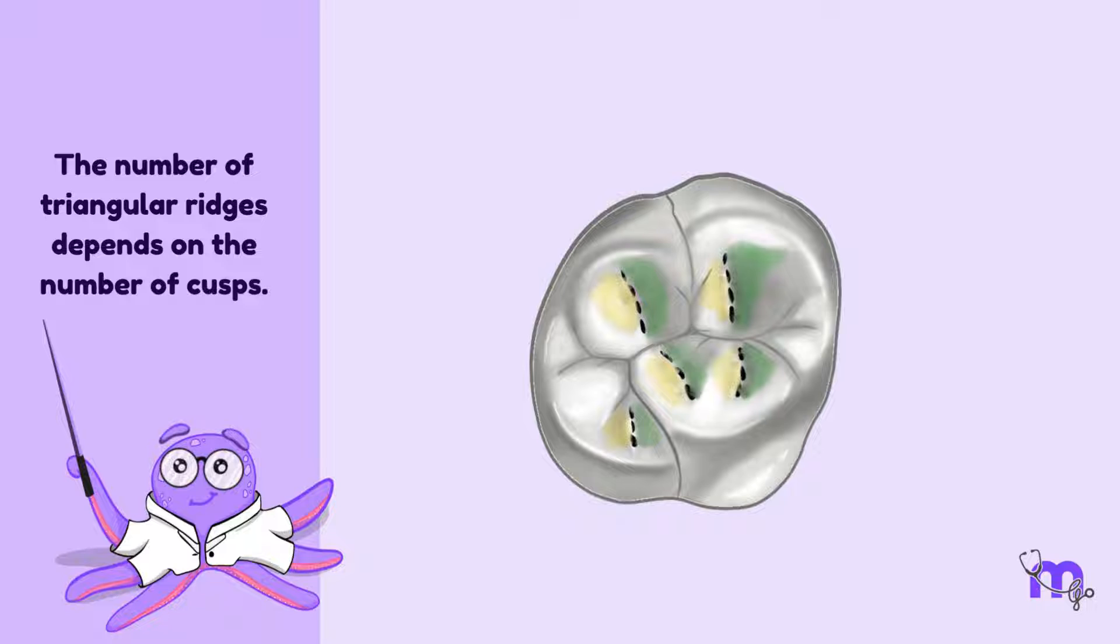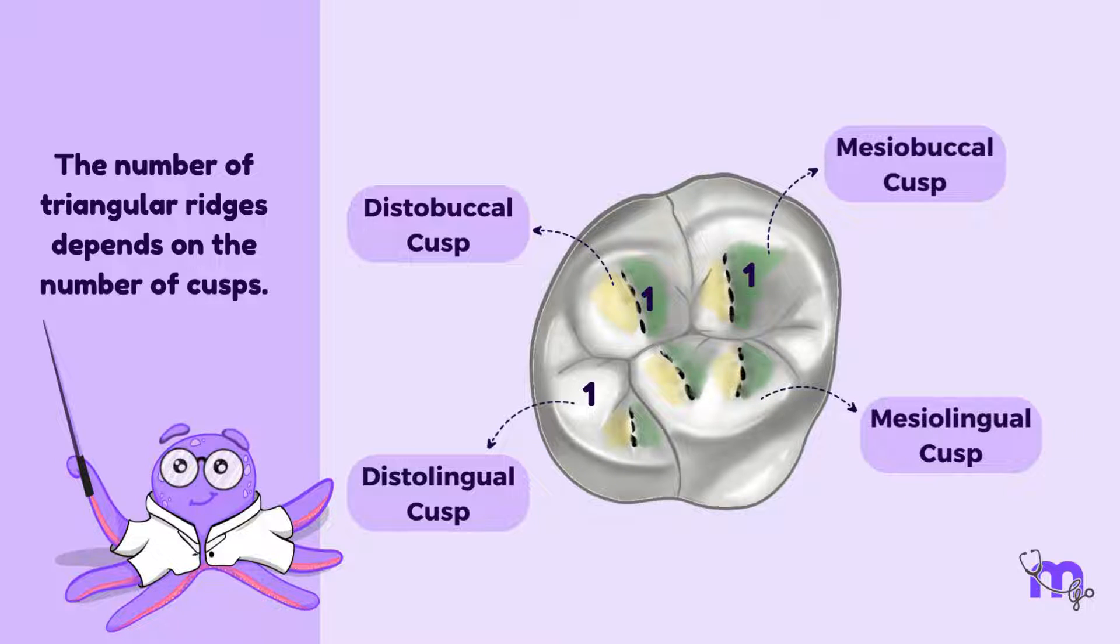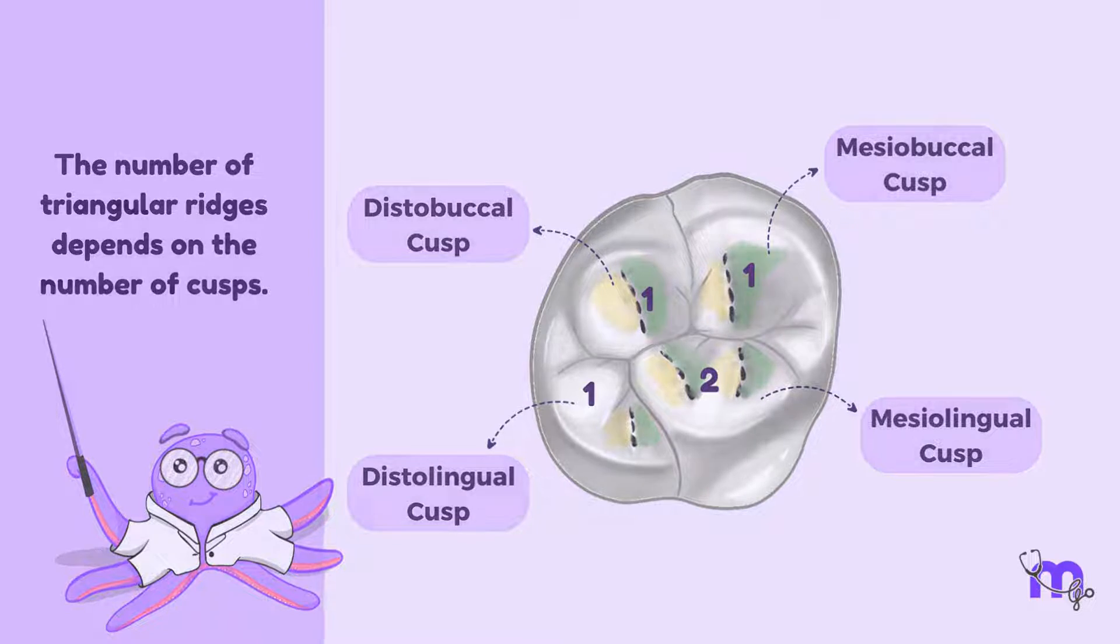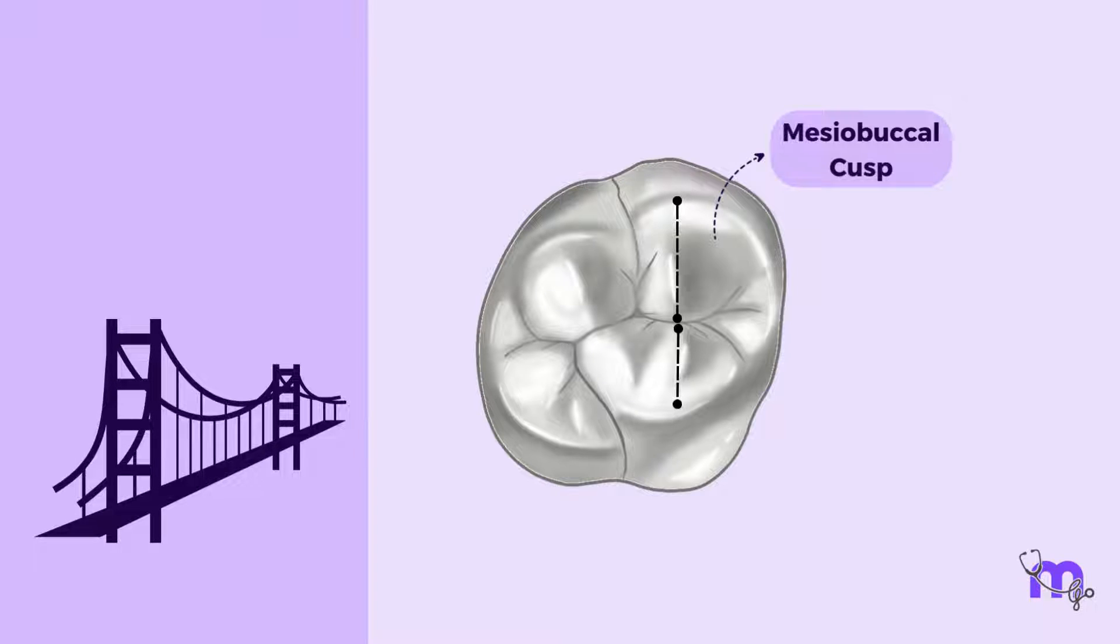The maxillary first molar, for example, has four cusps. The mesiobuccal, distobuccal and distolingual cusps, each with a single triangular ridge and the mesiolingual cusp with two triangular ridges, the mesial and distal. Now trace the mesiobuccal triangular ridge and the mesial triangular ridge of the mesiolingual cusp. They meet to form a bridge. This forms another ridge known as the transverse ridge that crosses transversely the occlusal surface of posterior teeth.